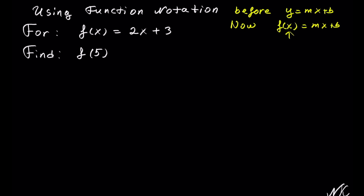In this example we have f of x equals to 2x plus 3, and we have to calculate f of 5. What we have to do here is to substitute x equals to 5 into the original equation. So every time we see an x, we are going to be plugging in 5.